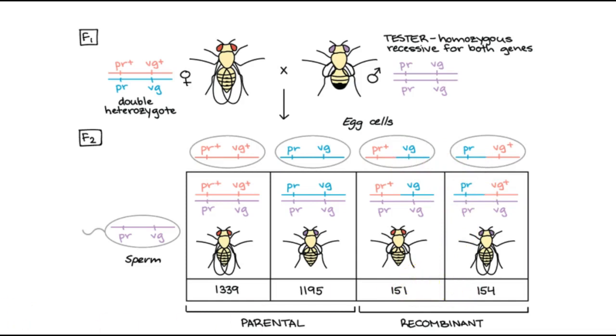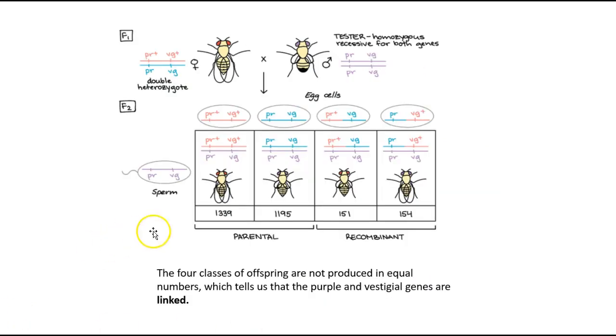And so we consider those recombinants. And so how we basically determine that situation, first of all, again, how do we determine it? They're not produced in equal numbers, which the Punnett square would tell us. Obviously, it would give us 25% in all, but it didn't turn out that way. And so basically that's how we consider these genes linked, that they're close enough that they were actually separated.